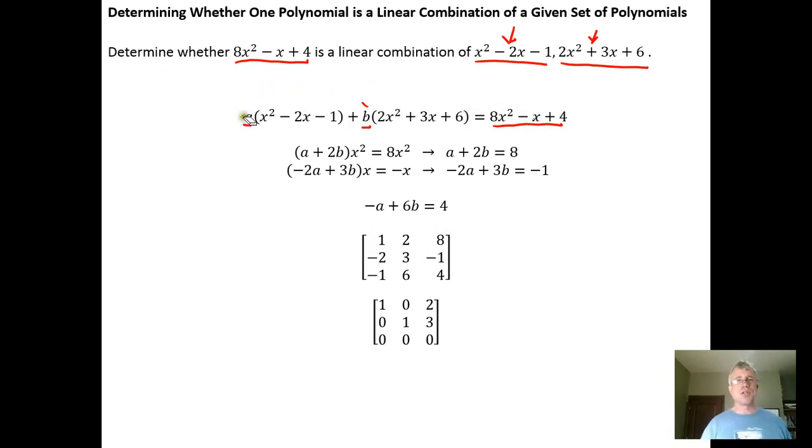So the process is distribute the A into the parentheses, distribute the B into the parentheses, and then group things based on like terms. If we focus on the x² terms first, we would get A times x² plus B times 2x² needs to equal 8x². If we factor the x² off, we'll get A plus 2B times x² needs to add up to give us the 8x² term. That means the coefficient A plus 2B has to give us 8, so we get this equation. This is equation 1: A plus 2B equals 8.